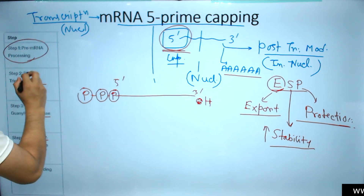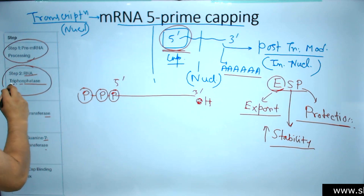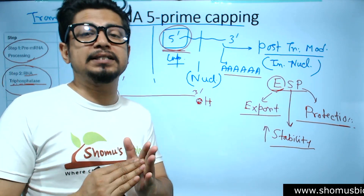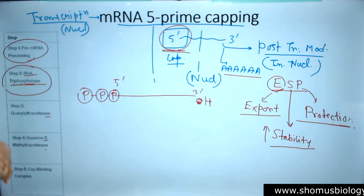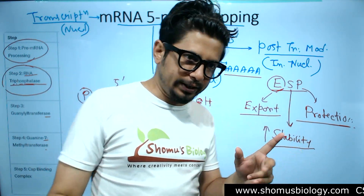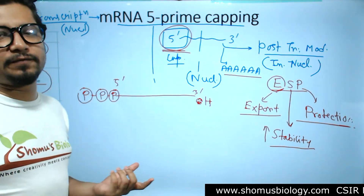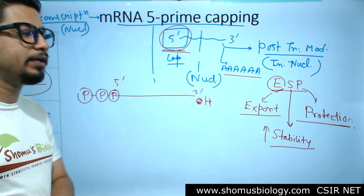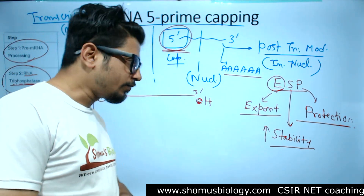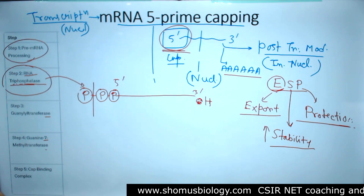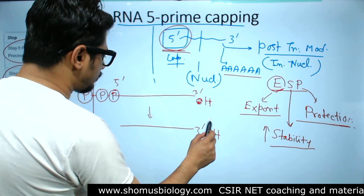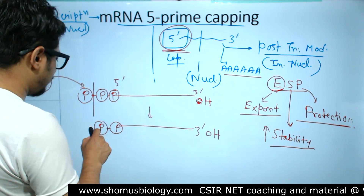The first enzymatic step of 5' capping involves RNA triphosphatase. This enzyme acts when three phosphate groups are present at the 5' end — that's why it's called RNA triphosphatase. A phosphatase enzyme cleaves phosphate groups; here it cleaves one phosphate group from the 5' terminal. After this step, the 3' hydroxyl remains unchanged, and two phosphate groups remain at the 5' end.